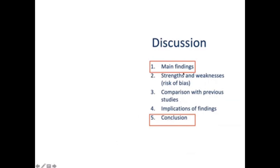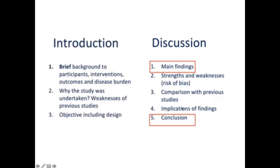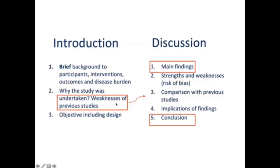So now we have written the main findings and the conclusion of the discussion. We only have three more paragraphs to write: strengths and weaknesses, comparison with previous studies, and implications of the findings. In the introduction, we wrote what the weaknesses of previous studies were — we use those same references in the third paragraph of the discussion to compare our main finding with findings of previous studies.